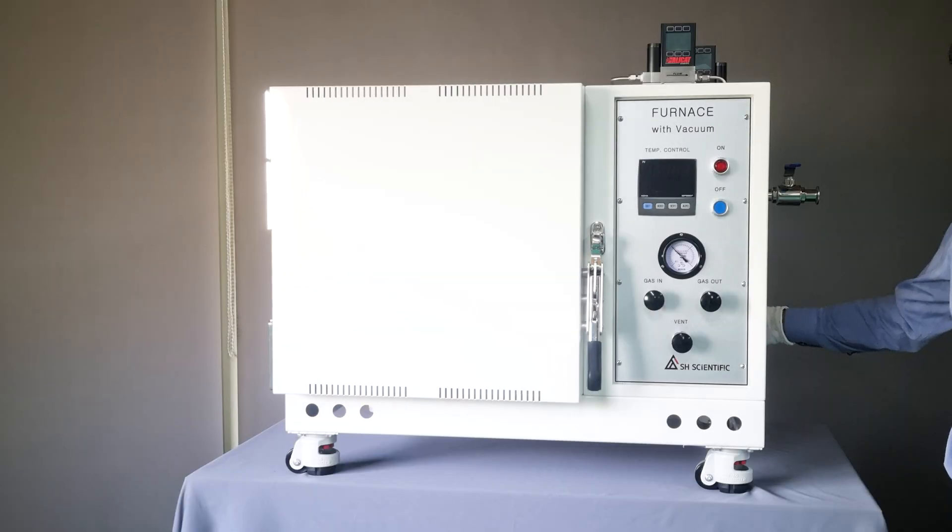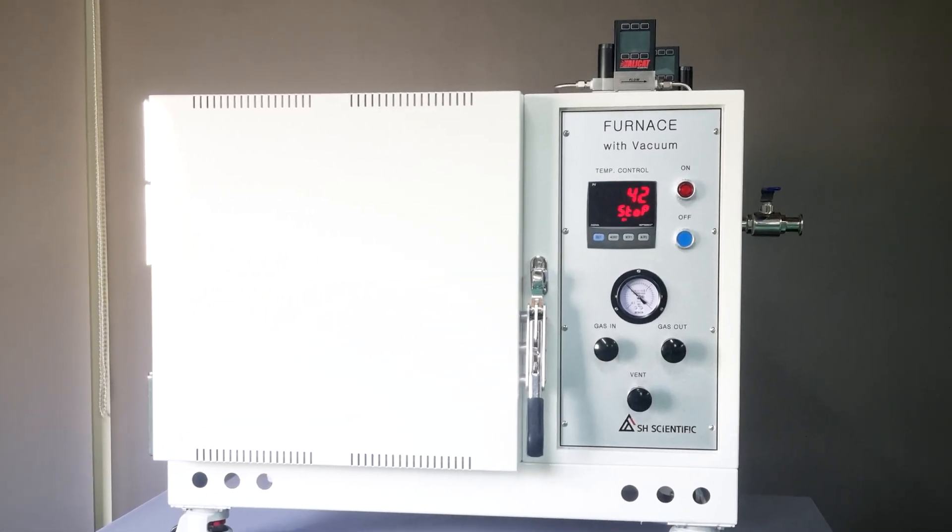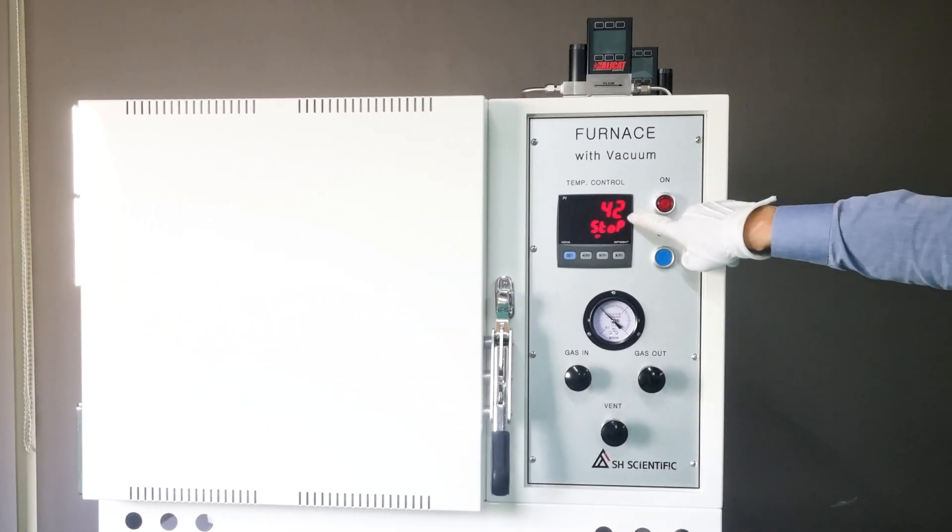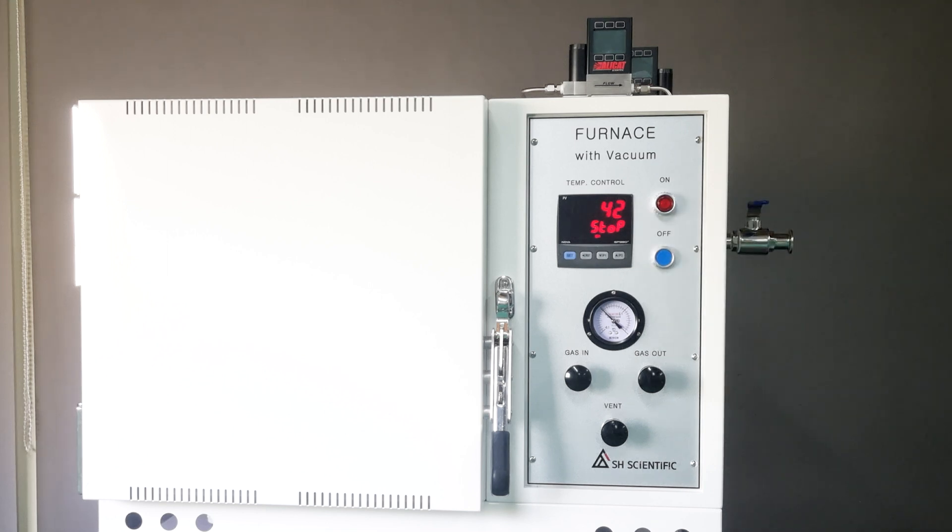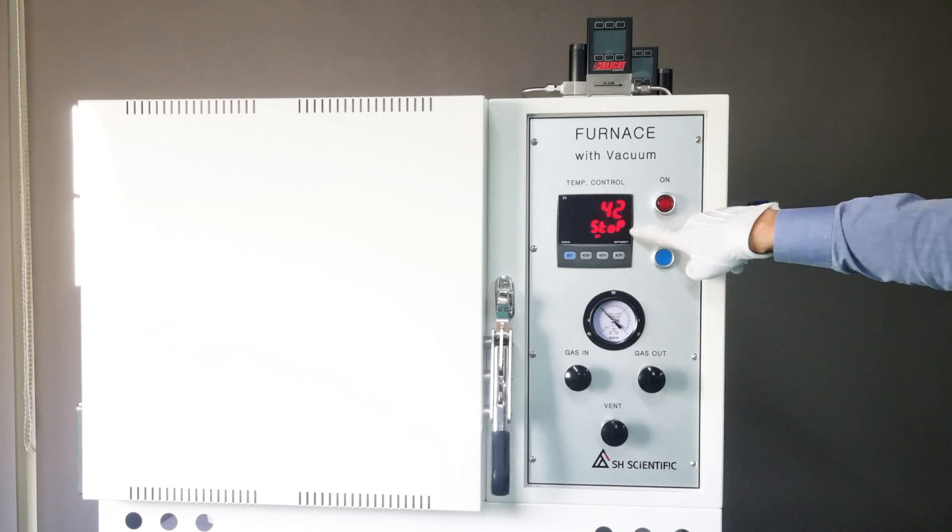First, turn on the main switch. The upper window shows the current temperature inside the chamber, and the lower window shows the operation status. Right now, the furnace is not in operation, so you see stop.